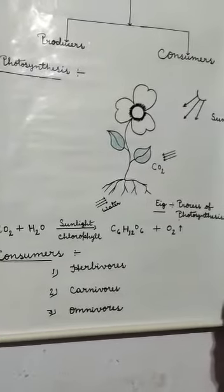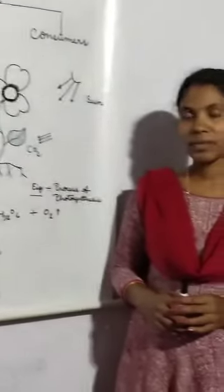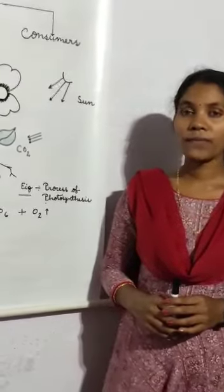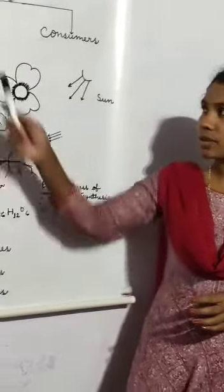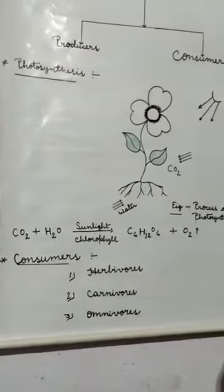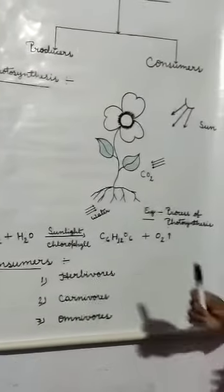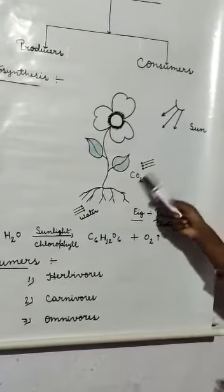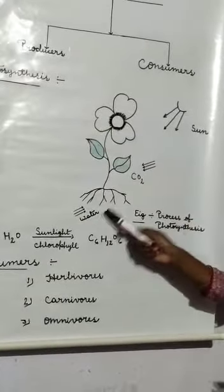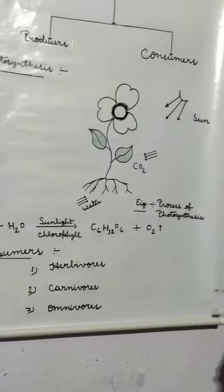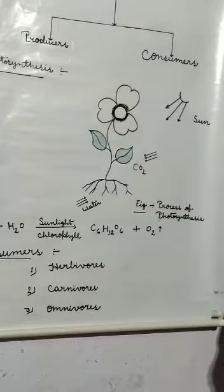How do green plants make their own food? Green plants make their own food by the process called photosynthesis. Photosynthesis is the process in which plants use carbon dioxide from the air, water from the soil. In the presence of sunlight and chlorophyll, they make food and release oxygen.